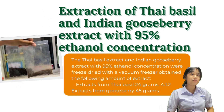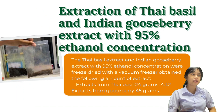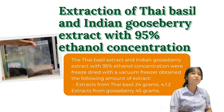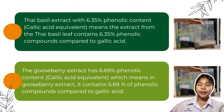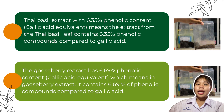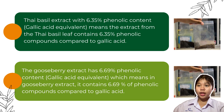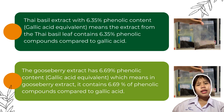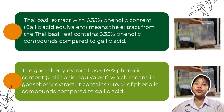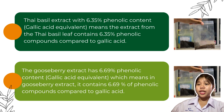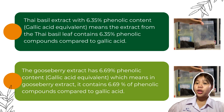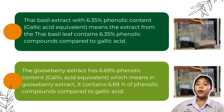For the results of the extraction of Thai basil and Indian gooseberry extract with 95% ethanol concentration, we freeze-dried with our compressor and obtained the following amounts: Thai basil extract yielded 24 grams and Indian gooseberry extract yielded 45 grams. Based on the phenolic content method, the phenolic content expressed as gallic acid equivalent: Thai basil extract has 6.35% phenolic content, meaning the extract contains 6.35% phenolic compounds compared to gallic acid. The Indian gooseberry extract has 6.69% phenolic content gallic acid equivalent, meaning it contains 6.69% of phenolic compounds compared to gallic acid.